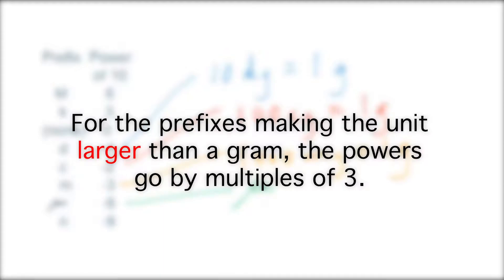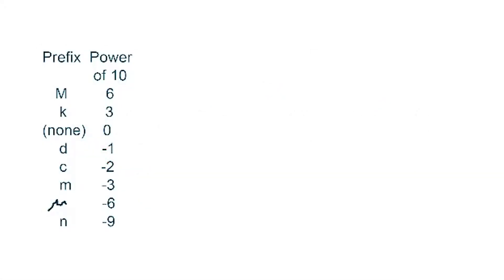For the prefixes making the unit larger than a gram, the powers go by multiples of 3. We've all heard the prefix kilo. There are 1,000 grams in a kilogram. Mega sure sounds larger. There are a million grams in a megagram. Hopefully, these tips have helped. You need to know the meaning of these metric prefixes.